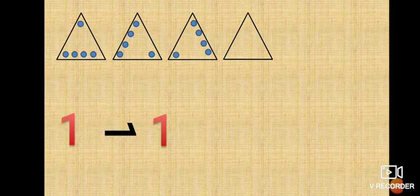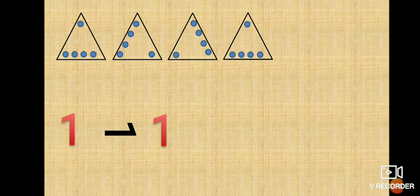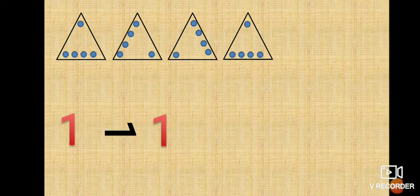If you observe carefully, the single ball at the top of the triangle has come to the right corner in the second triangle, then it goes to the left corner in the third triangle, and again it will go to the top corner in the fourth triangle. So we can say that the fourth triangle will look like the first triangle. The answer is like this. So if I want to draw a fifth triangle, it will look like the second triangle, and the sixth triangle will look like the third triangle. This way we can get the answer of the patterns.